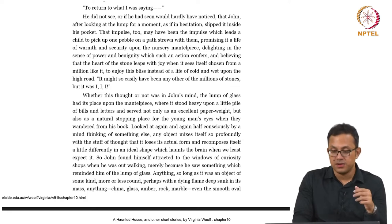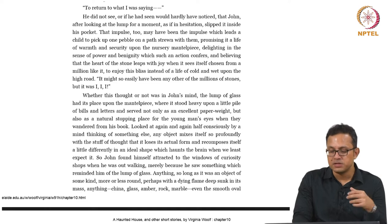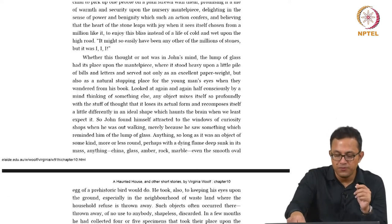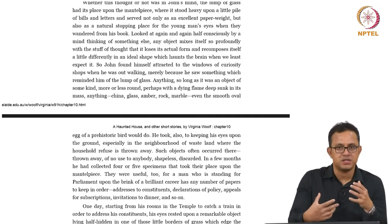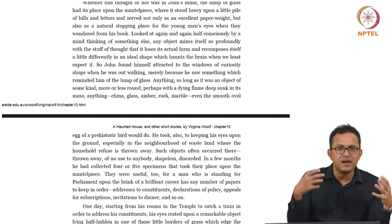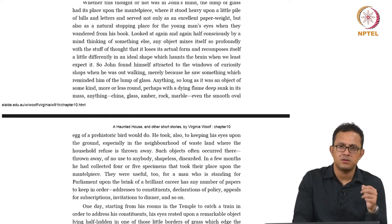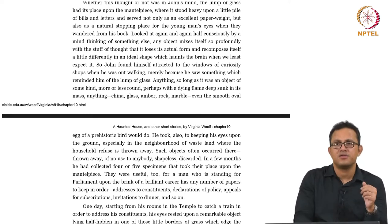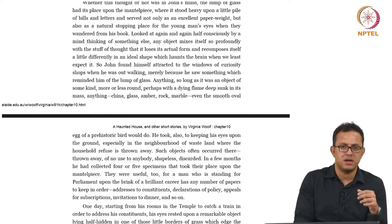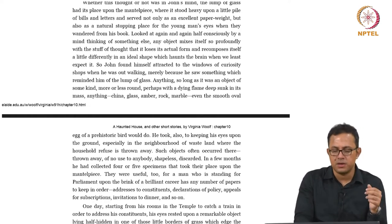Anything as long as it was round — perhaps with a dying flame deep sunk in its mass — anything china, glass, amber, rock, marble, even a smooth oval egg of a prehistoric bird would do. Anything he sees connects him to the lump of glass he had picked up. The lump of glass becomes something like an archetype in his mind — the archetype of the solid object — and everything else around him serves as a reminder of that original archetype from the beach.